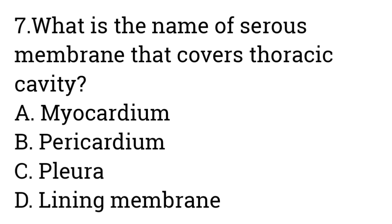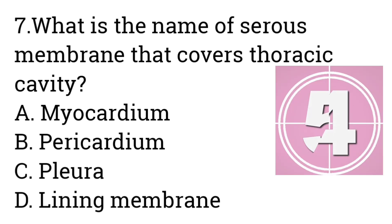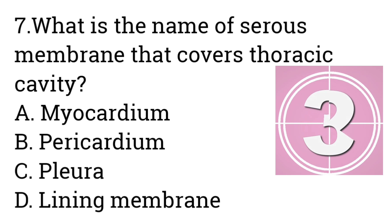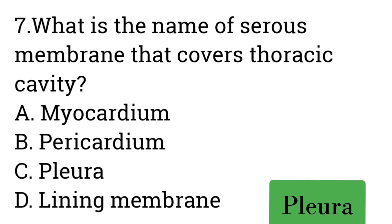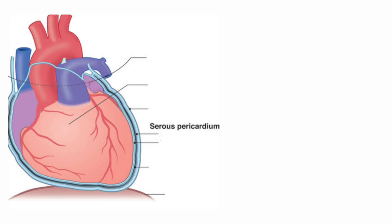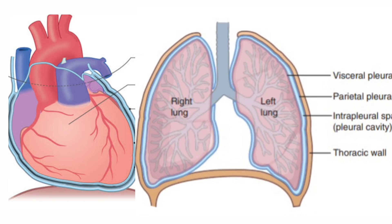Question number seven: What is the name of the serous membrane that covers the thoracic cavity? Option A: Myocardium, B: Pericardium, C: Pleura, D: Lining membrane. Answer is Pleura. The membrane which covers the heart is called pericardium, and the membrane which covers the thoracic cavity and lungs is called pleura.